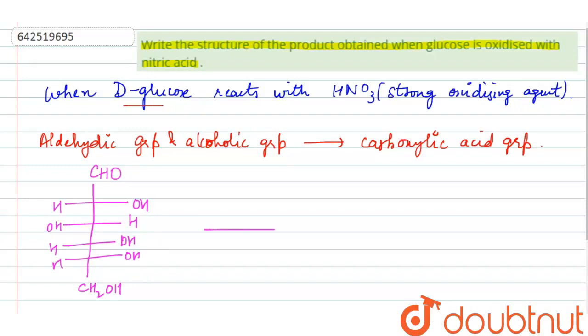This is the molecule of D-glucose and when it is reacted with HNO3, it will be converted into saccharic acid. That is the molecule. Here it is the aldehyde group and here is the alcoholic group, so they both will be converted into carboxylic acid group and oxidization will be taking place here.